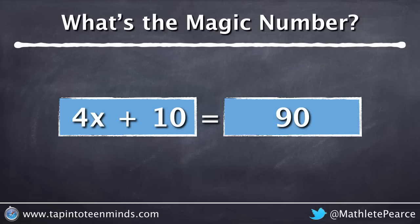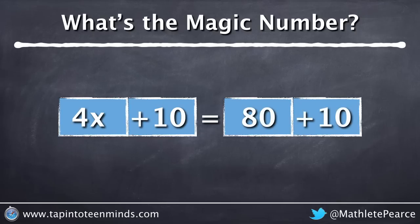Now we can break this down further. Since I know I have a 4x plus 10 on the left side, then technically I have a something plus 10 on the right side. Because we have 90 on the right side, I could break that down and make it look something like this. 80 plus 10 is 90.